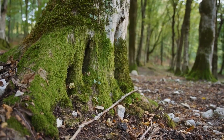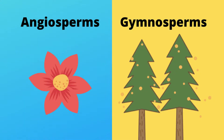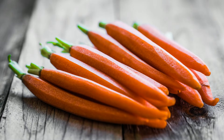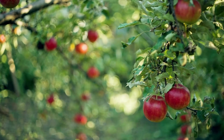You can also classify plants into those with flowers and those without. Angiosperms are plants that have flowers. They contain a carpel — a stigma, style, and ovary. Most vegetables and fruits we like to eat are angiosperms.